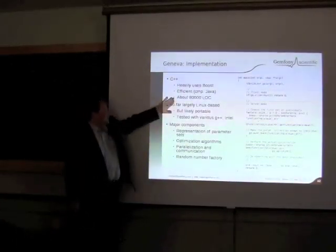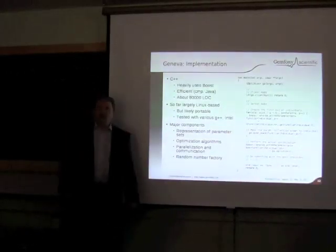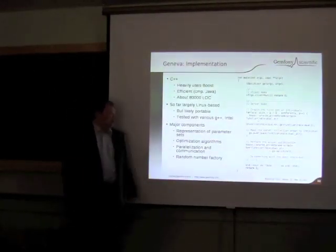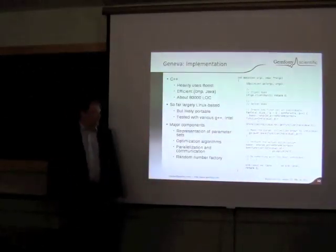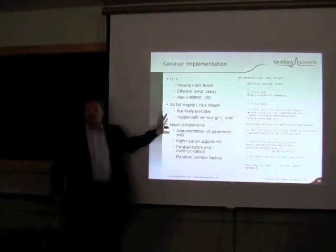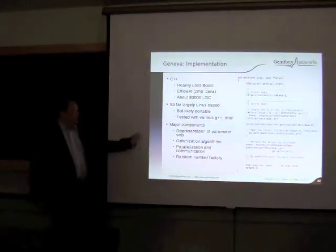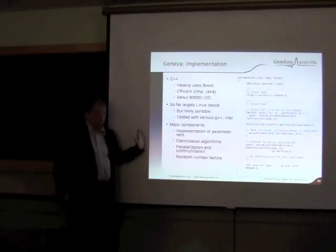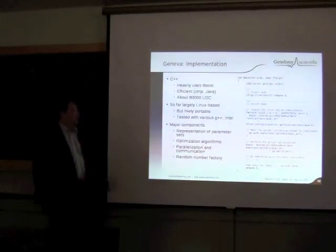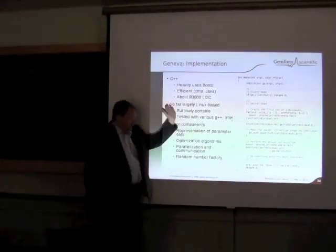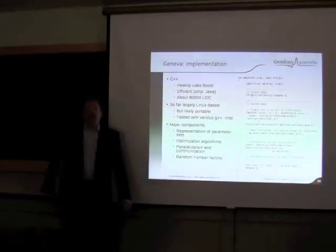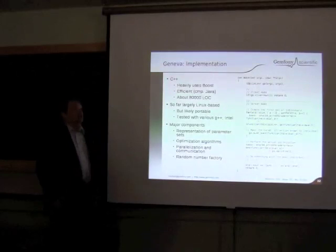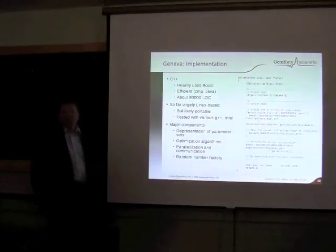No surprise — it's C++, currently about 80,000 lines of code with some proprietary extensions. Mostly Linux-based at this point in time — again, no surprise, because over 90% of the top 500 fastest machines in the world are Linux machines, and this is targeted at that kind of machine. It's likely portable because the only external dependency really is Boost. So far we've tested it with various G++ versions and also with Intel. We still have to port it to Microsoft when the use case arises, which actually might currently be the case, as we're talking to a user who only has Windows code.